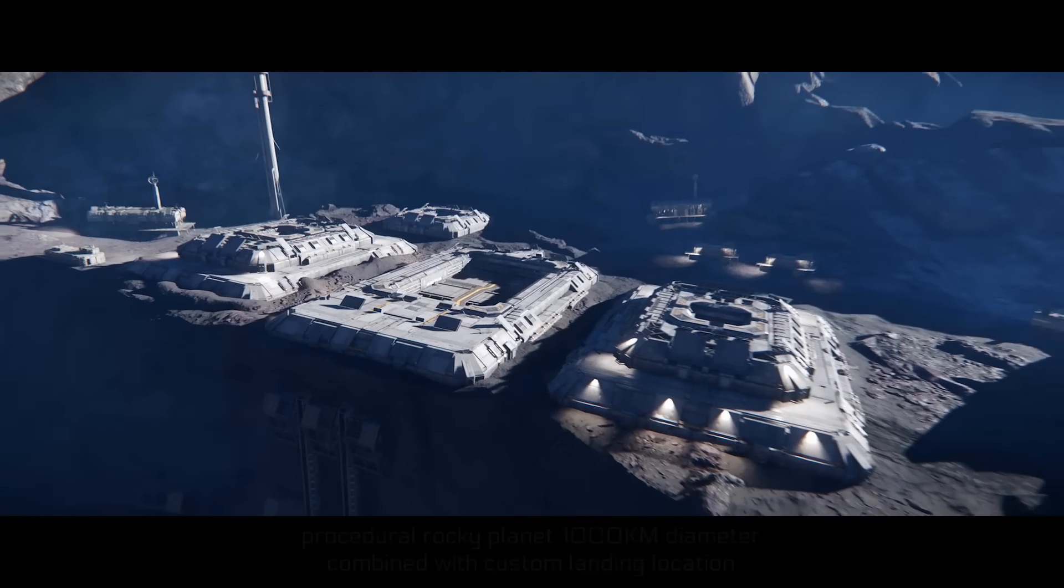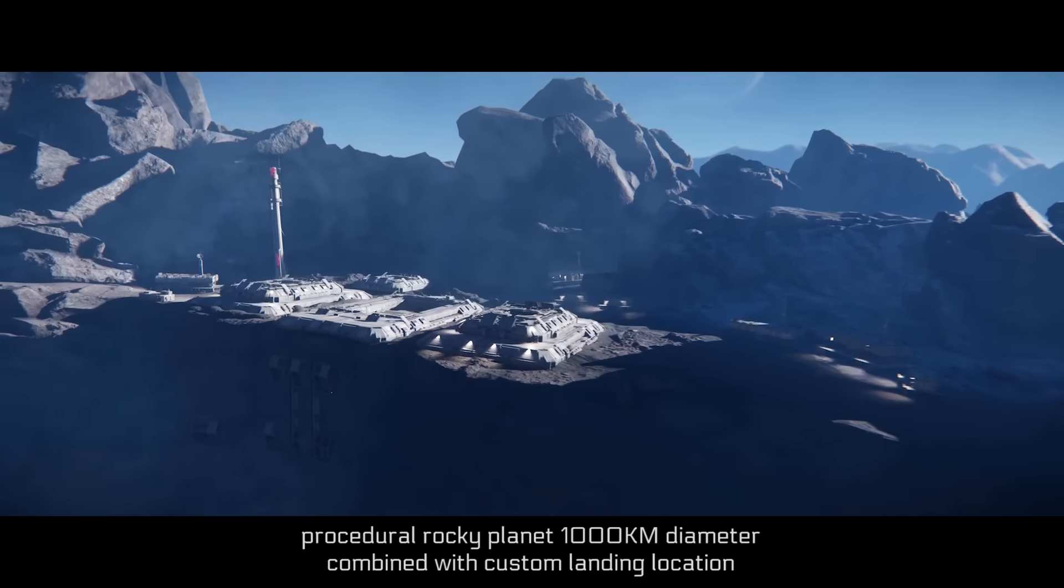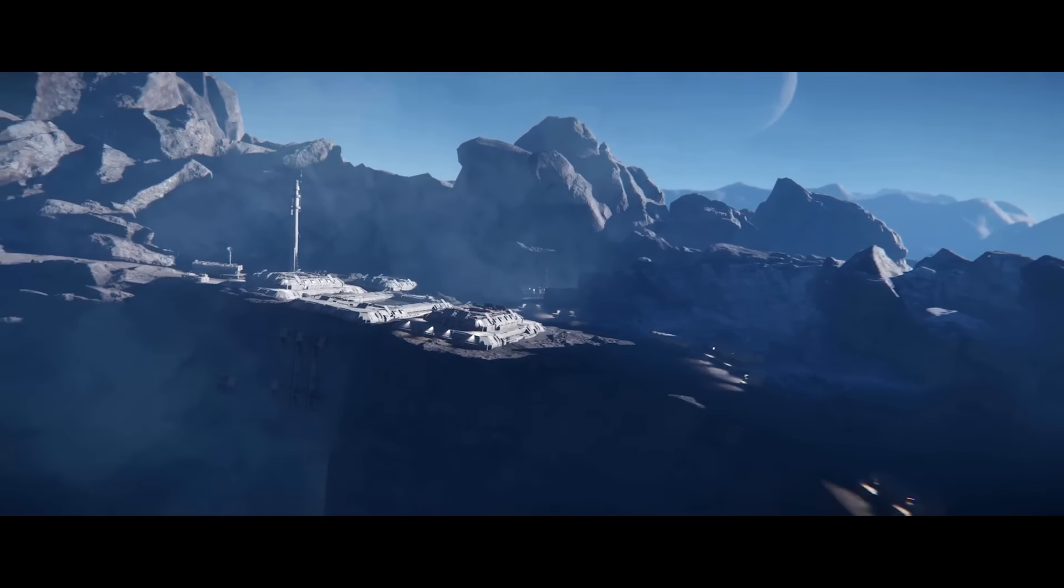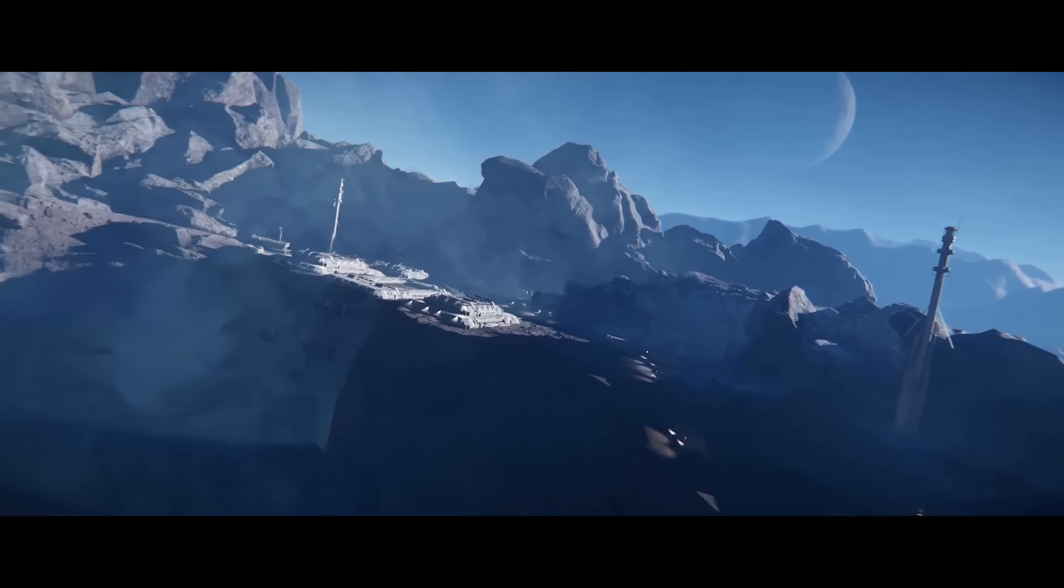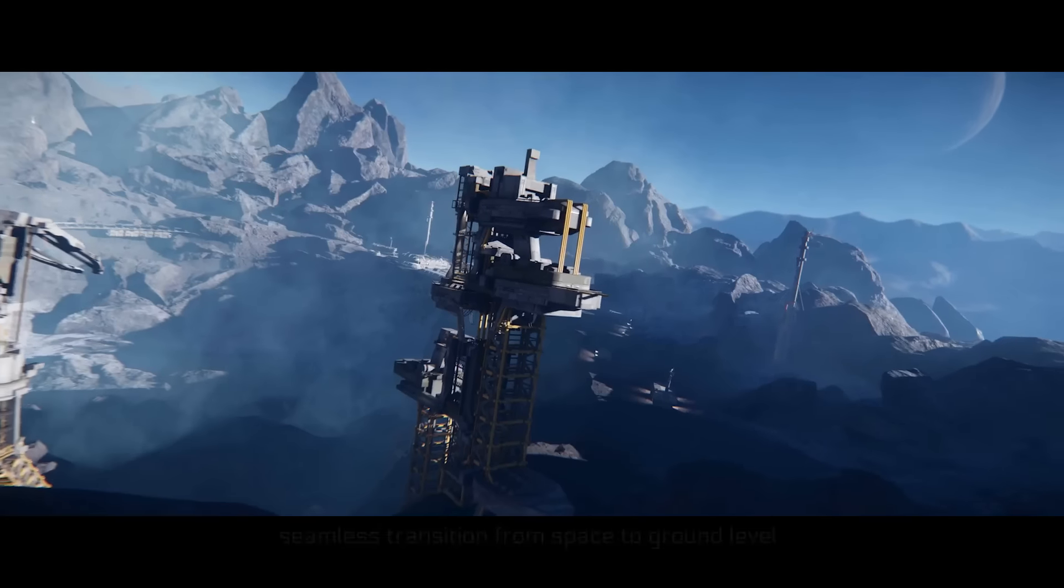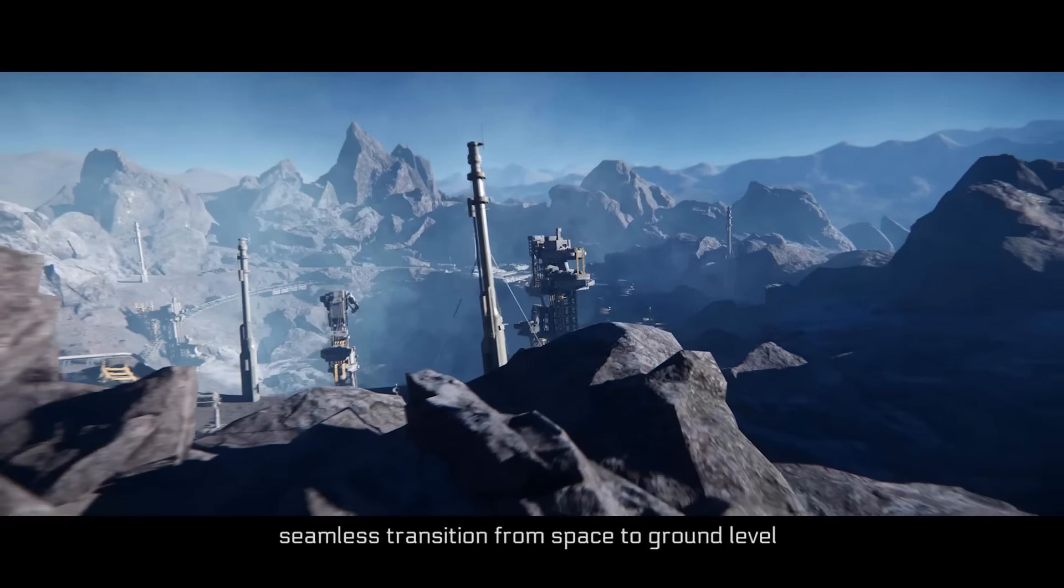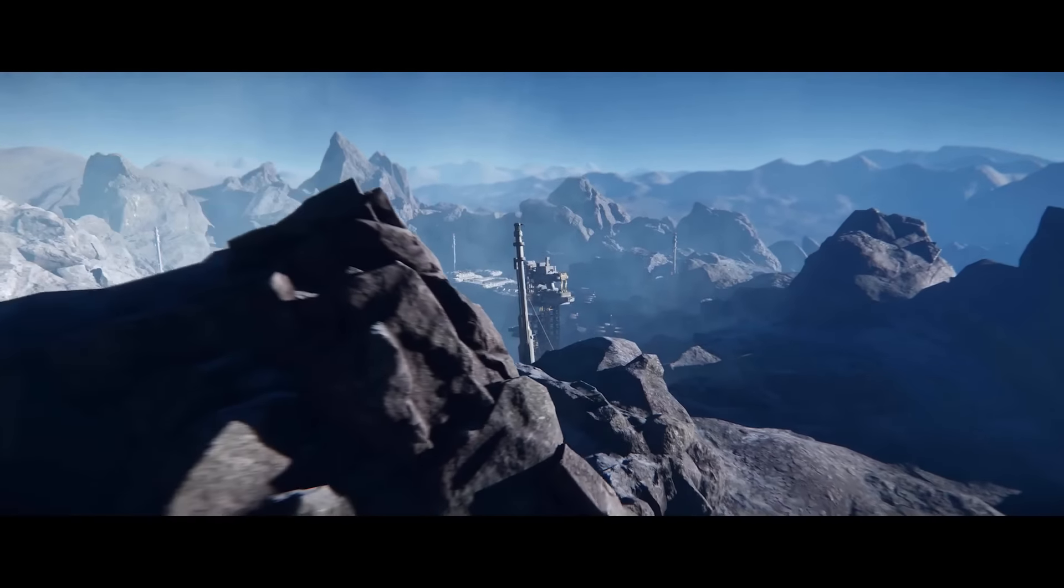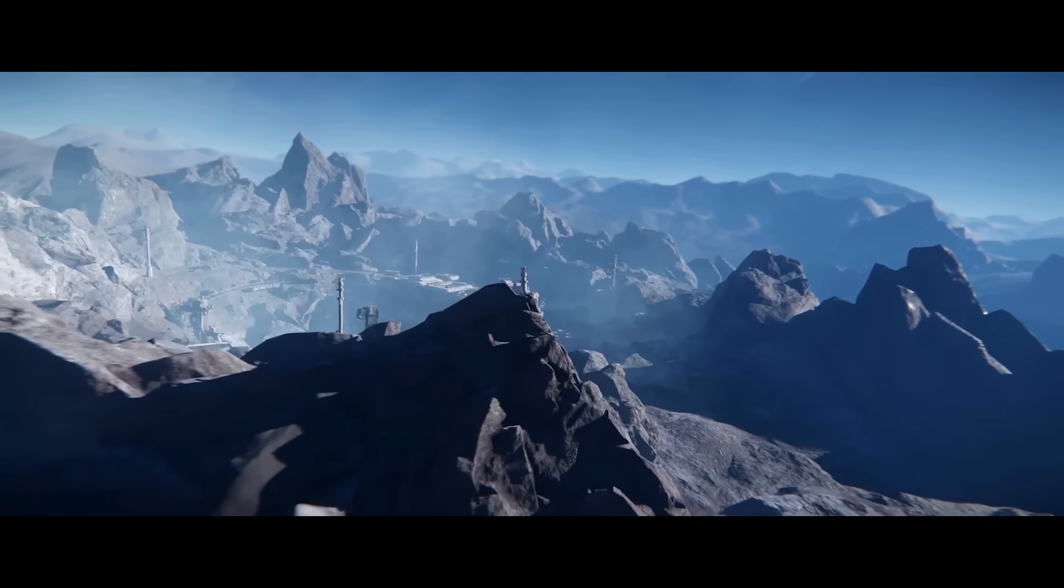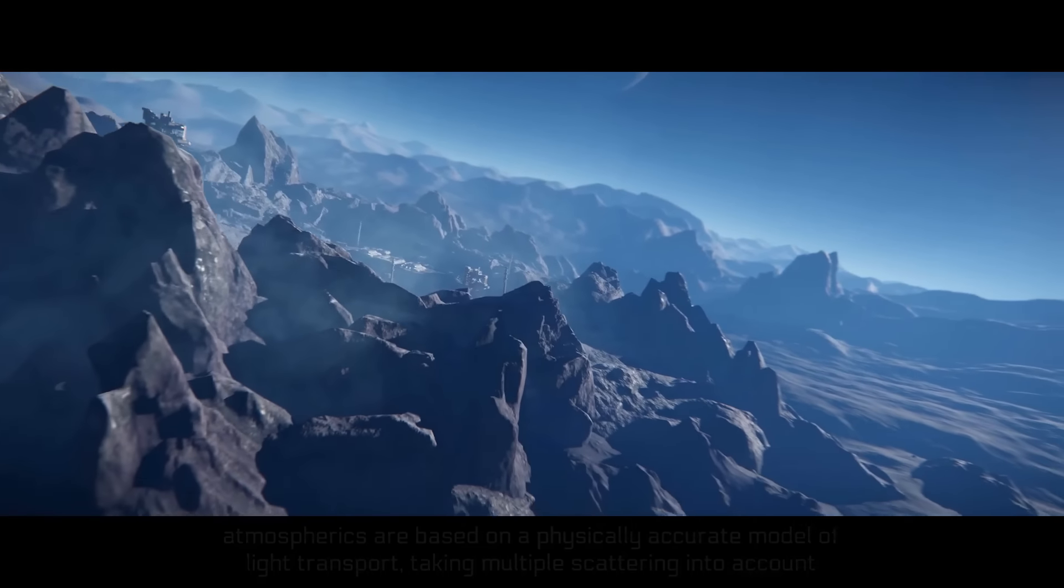I think they say that in the trailer itself. But yeah, procedural rocky planet with a thousand kilometer diameter combined with custom landing location. I think the custom landing location is basically the rocky area around what you can tell is a hangar that they've already pre-set up. But then the rest of the planet, and they've stated before, is going to have to be procedurally generated if they're going to make full planets, especially to how many they want to make.